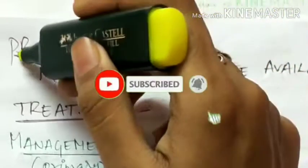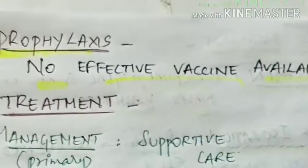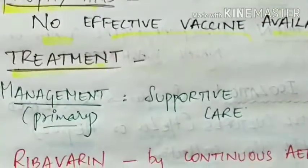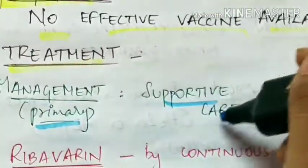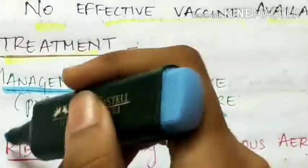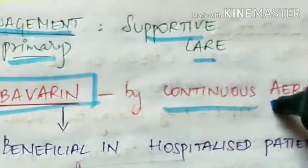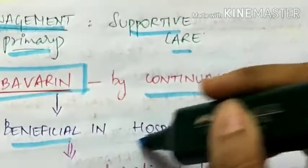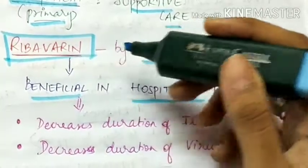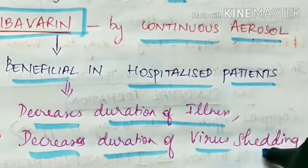Prophylaxis and treatment: there is no effective vaccine available against respiratory syncytial virus. Treatment is primarily supportive care. Ribavirin drug is given by continuous aerosol and is beneficial in hospitalized patients — it decreases the duration of illness and also decreases the duration of virus shedding.